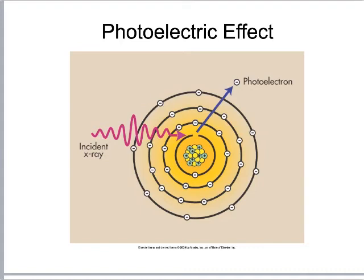The photoelectric effect is the interaction we most want inside the patient. The atom is ionized typically at a shell close to the nucleus, requiring sufficient photon energy, and the photon is completely attenuated — all its energy is given up creating an ion pair. The freed electron is called a photoelectron. Because the x-ray is completely stopped, things that cause the photoelectric effect show up very clearly as white on our image.